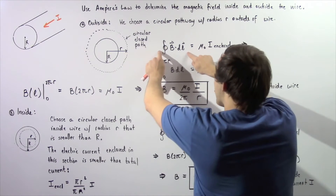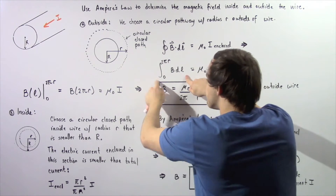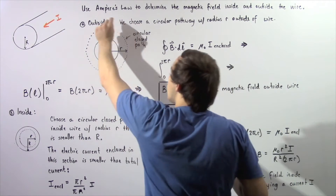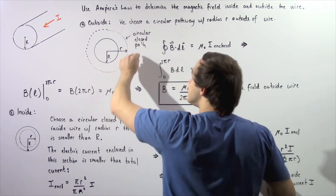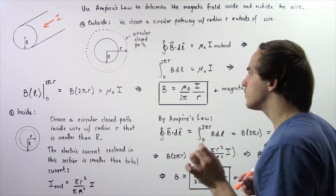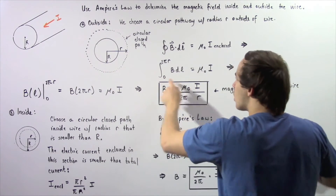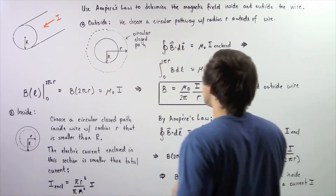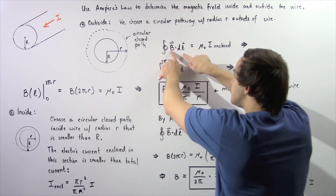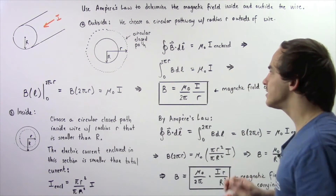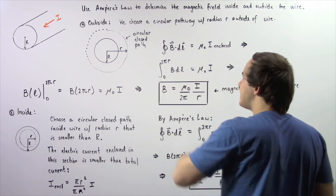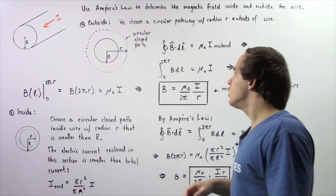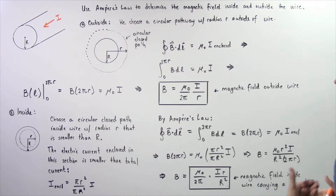This entire quantity is replaced as we integrate from zero all the way around our closed pathway. The total distance is equal to the circumference of this outer circle, from zero to two pi r, where r is the radius of the circular closed pathway. The dot product of these two vectors is simply equal to the product of the magnitude of B and dL, because the angle between them is zero and cosine of zero gives us one.